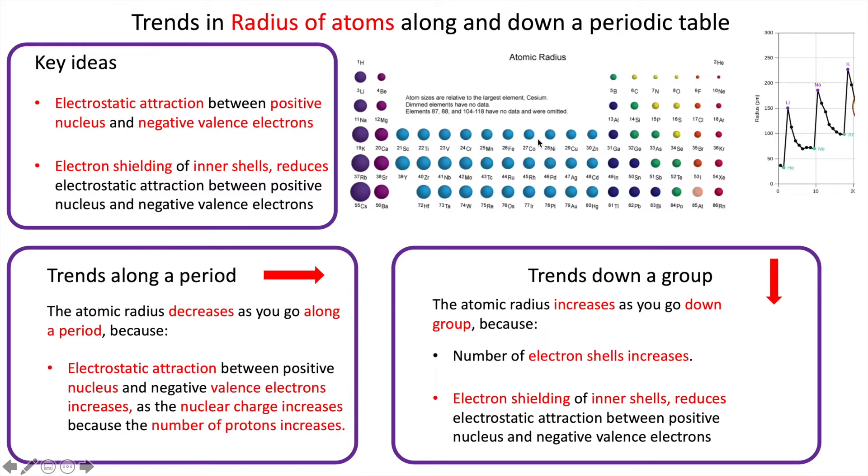But secondly, you've got the shielding of inner electrons increases, and therefore there's not so much electrostatic attraction between the positive nucleus and the negative valence electrons. So the valence electrons aren't pulled as much in.